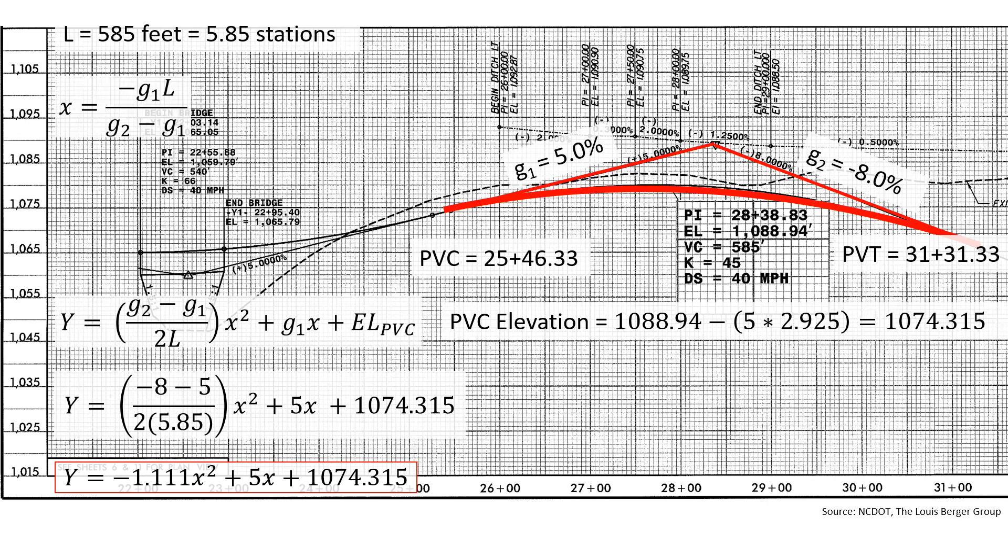Now we can look for the location, station, and elevation of our high point. This is x equals negative g1 times l over g2 minus g1. We're going to add in our values here. So negative 5 times 5.85 over negative 8 minus 5 equals 2.25 stations.